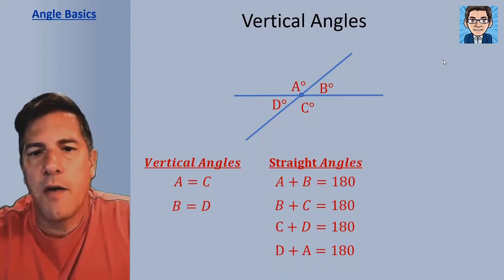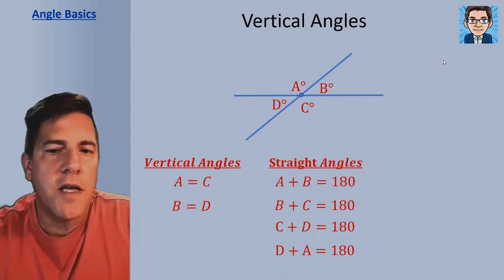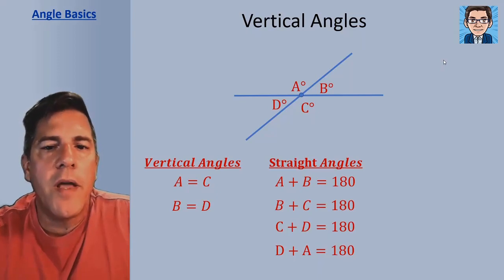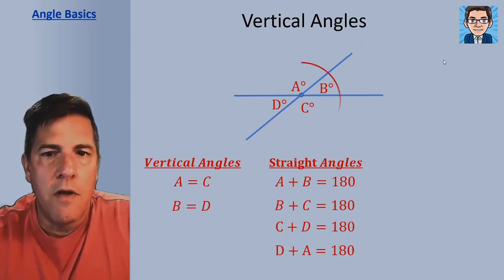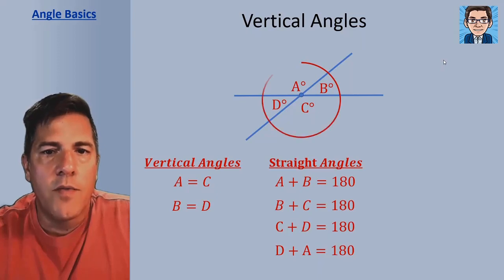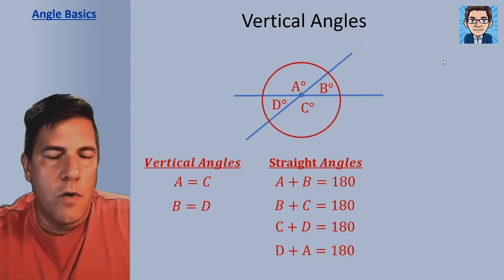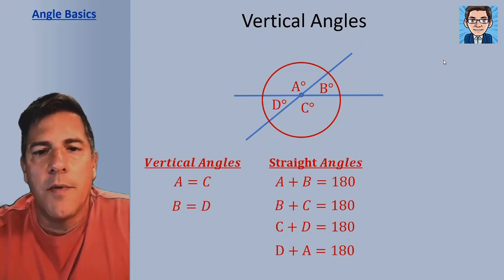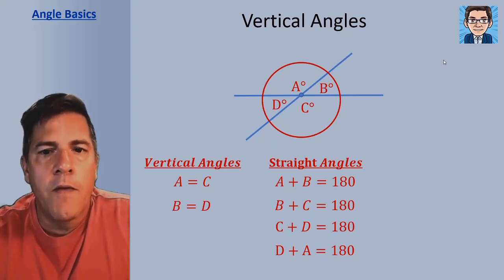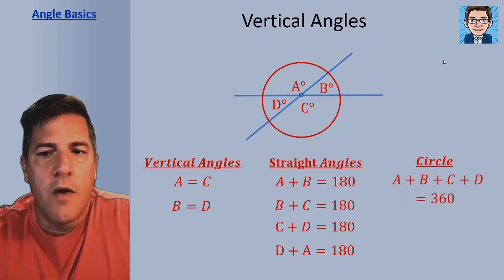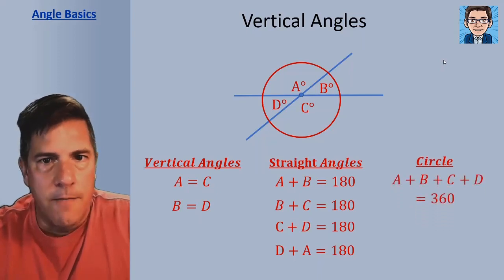Notice all those pairs make straight lines and add up to 180 as well. And if we look at A, B, C, and D all together, it forms a circle. So when we've got four — or any number of — angles that form a circle, we're going to have 360 degrees in all of those angles when we add them together.